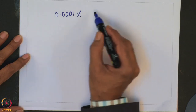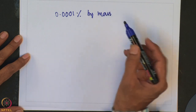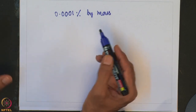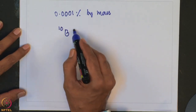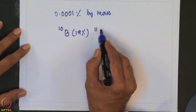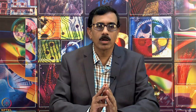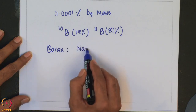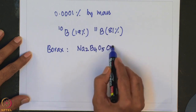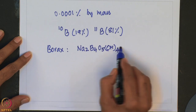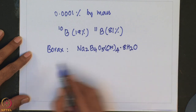Boron is a fairly rare element with abundance of about 0.0001 percent by mass in the earth's crust. It exists in two isotopic forms: boron-10 with abundance of about 19 percent and boron-11 at about 81 percent. The most common source of boron is borax, Na₂B₄O₅(OH)₄·8H₂O.